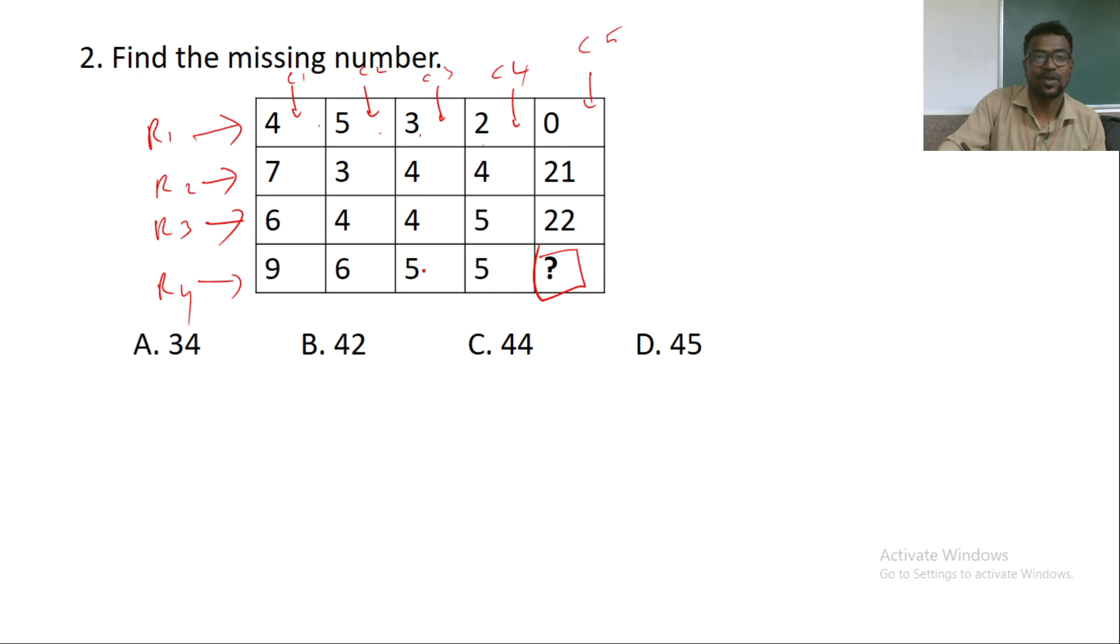So let us find out what is the logic over here. If we take column 1 and multiply with column 4 and then you have to subtract column 2 by adding column 3. So you will be getting the answer. Let us check it out. So here we are going to do 4 into 2 minus column 2 is 5 and 3. So 4 twos are 8 minus 8 and gives 0 which is nothing but column 5. So here we have tried with row 1. So let us apply the same logic in row 2.